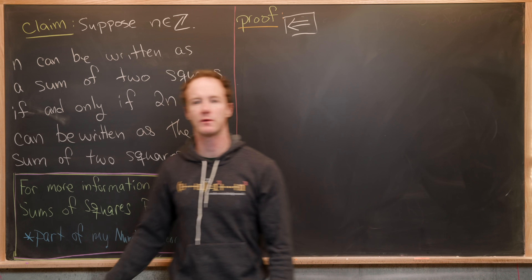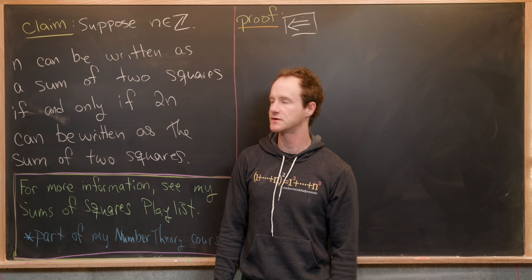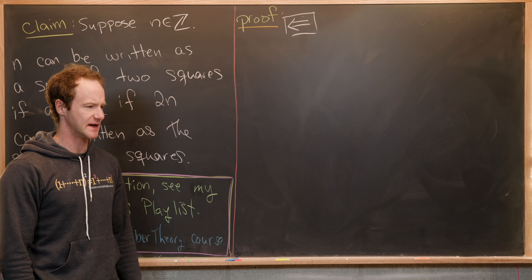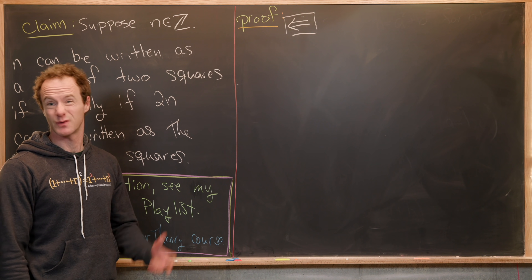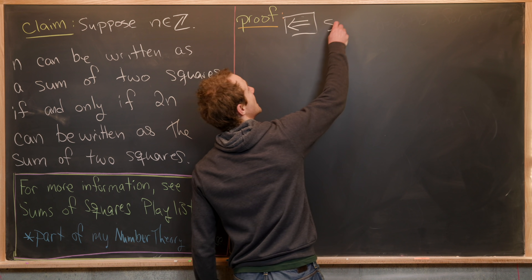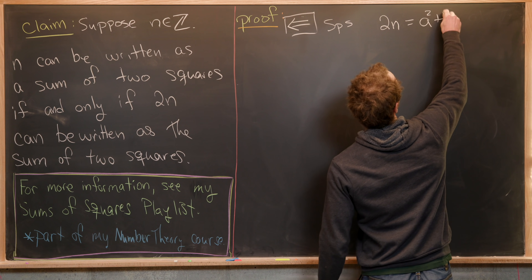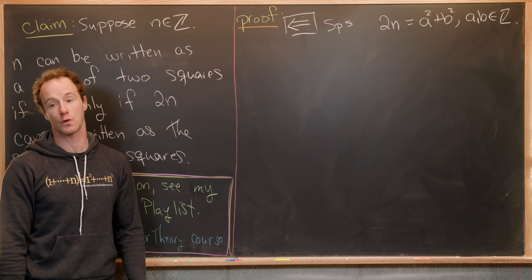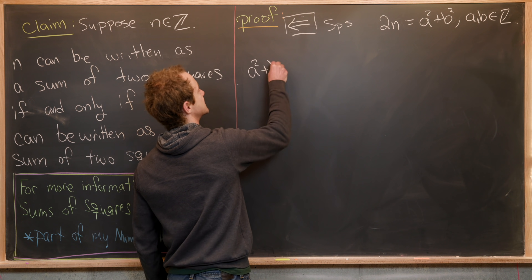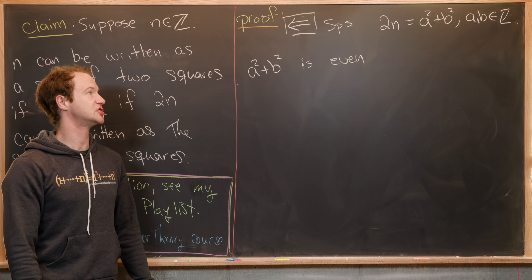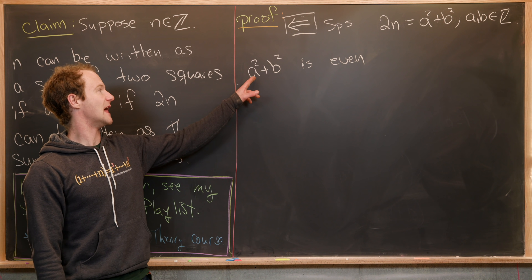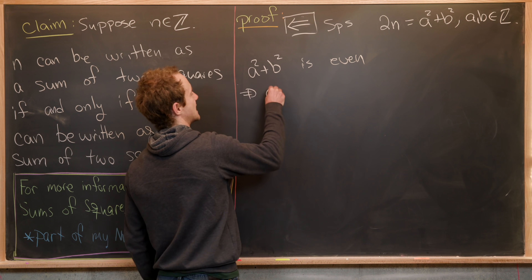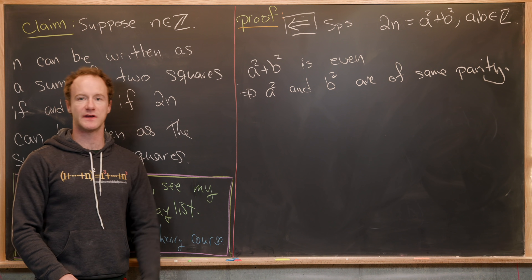Now we're ready for the reverse direction. We want to suppose that two times n can be written as the sum of two square integers and show that n can also be written as the sum of two square integers. We'll do this by calculation, without complex numbers. So suppose two times n equals a squared plus b squared for some integers a and b. Notice that a squared plus b squared is even, which means a squared and b squared have the same parity — they are either both even or both odd.